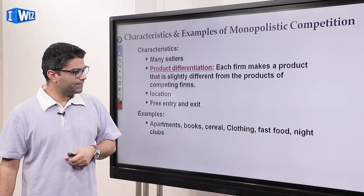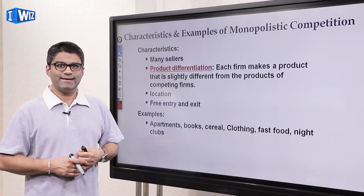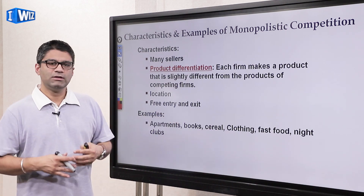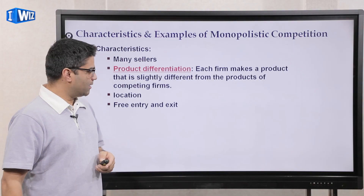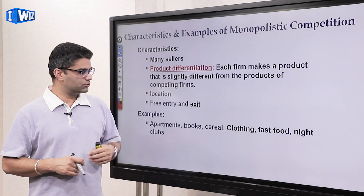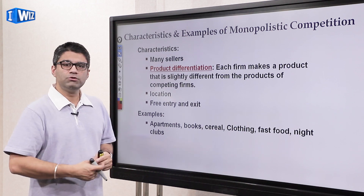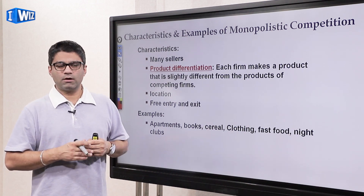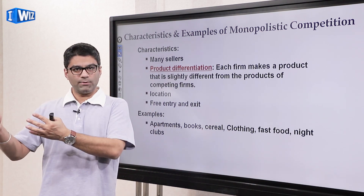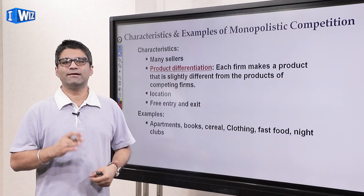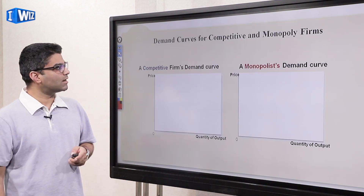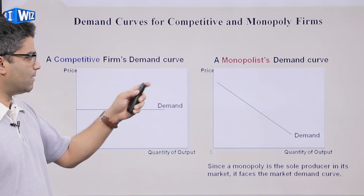Most goods we buy as consumers in daily life are part of a monopolistically competitive market — books, shoes, clothes, restaurants, nightclubs, bars, food, beer. What we buy is slightly different from what other producers sell; they're not completely different, but it's not perfect competition either, because every beer we buy is not identical and every restaurant we go to is not identical. So you can see that they come somewhere in between perfect competition and monopoly.